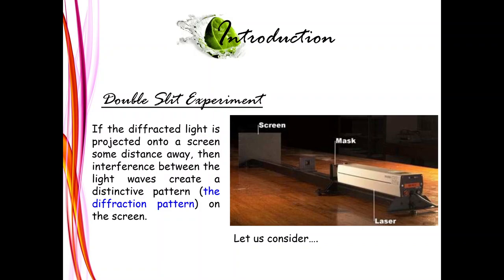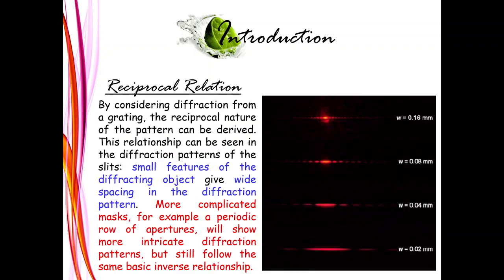This can be demonstrated by a laser double-slit experiment. If the diffracted light is projected onto a screen some distance away, interference between the light waves creates a distinct pattern called the diffraction pattern on the screen. When we look into the pattern, we see the reciprocal nature: small features of the diffracting object give wide spacing in the diffraction pattern. If we use more complicated masks — for example, a periodic row of apertures — then more intricate diffraction patterns result, but the same basic inverse relationship still follows.